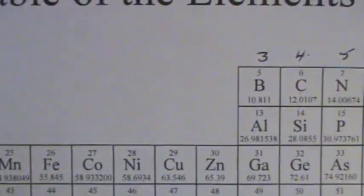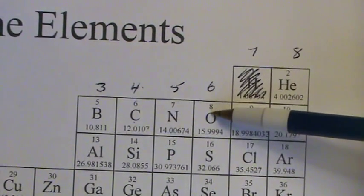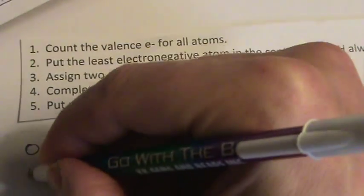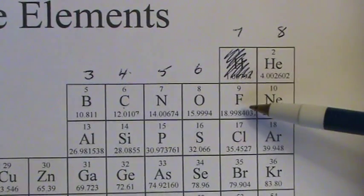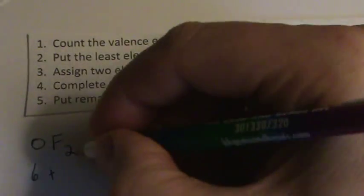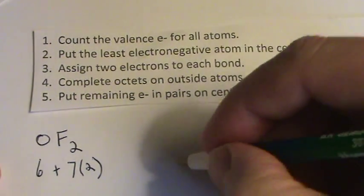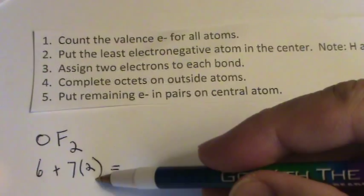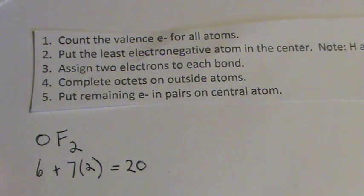It looks like oxygen is over here, and that's in group 16 or 6. So that has 6 valence electrons. And then fluorine right here is in group 7 or 17. So fluorine has 7 valence electrons. But there are 2 fluorines. So if we add 6 plus, well 7 times 2 is 14, plus 6, that should give me 20 total valence electrons to work with.